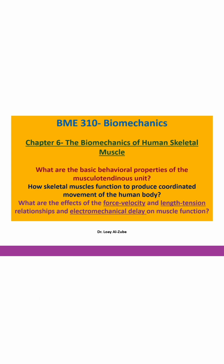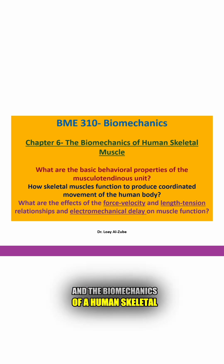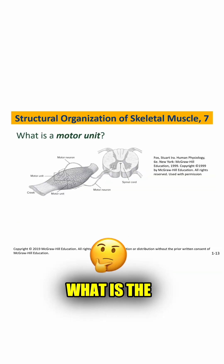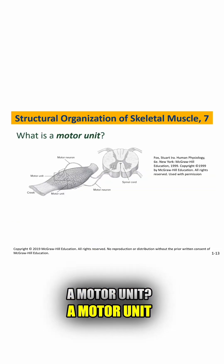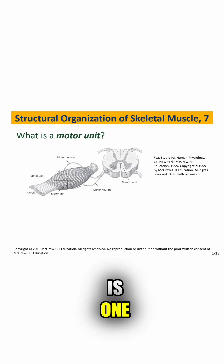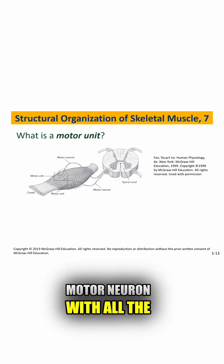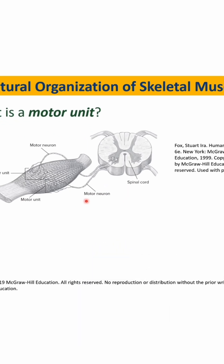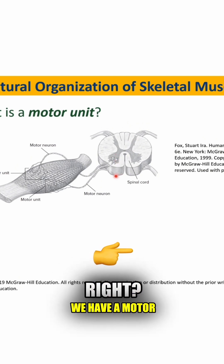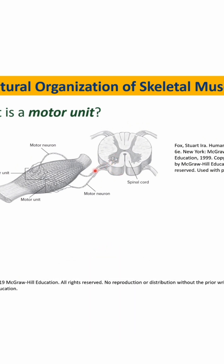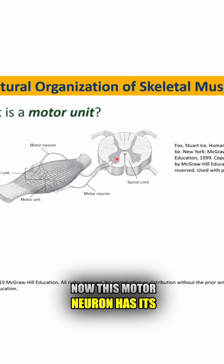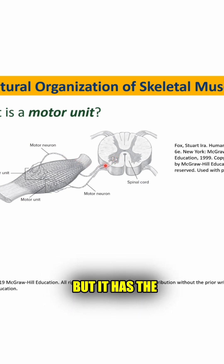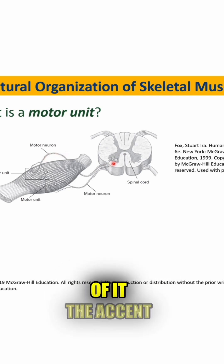Today I would like to start talking about muscles and the biomechanics of a human skeletal muscle. What is the definition of a motor unit? A motor unit is one motor neuron with all the fibers that it touches. If you look at this image here, this is the spinal cord. We have a motor neuron coming out from the spinal cord — its body is inside the spine, but it has an axon.